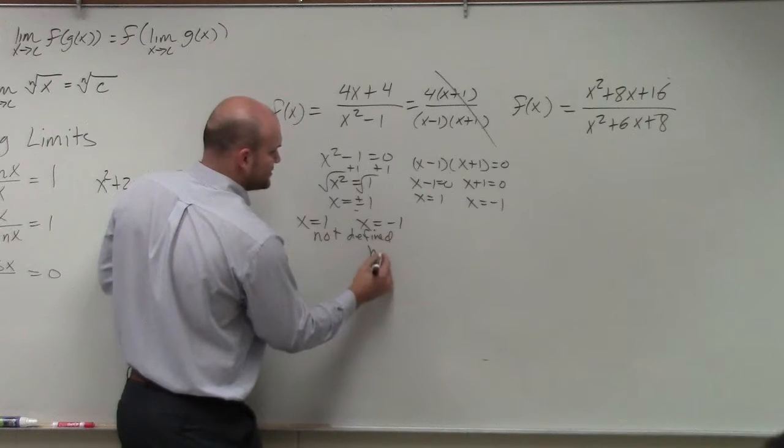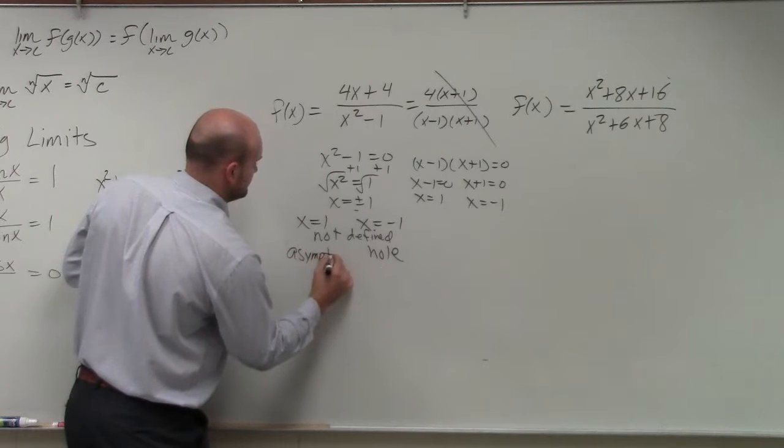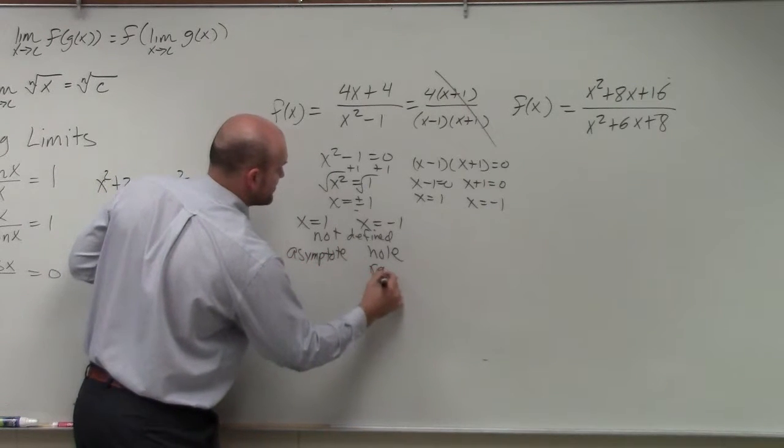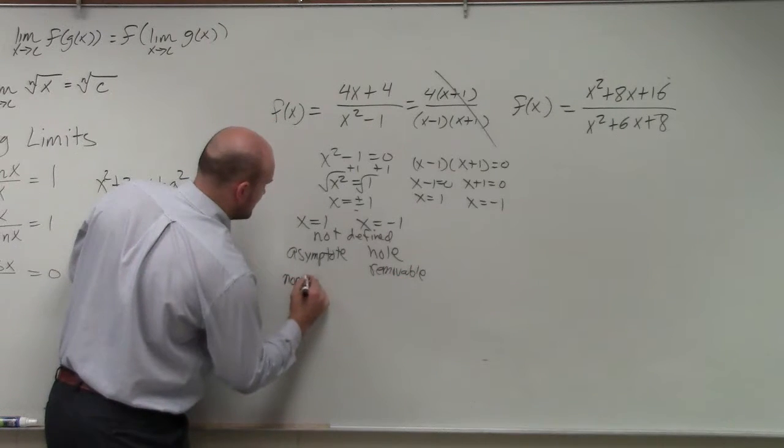So this is your hole and this is your asymptote. This is removable. This is non-removable.